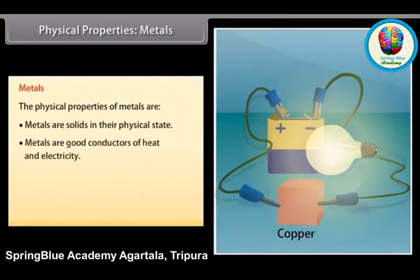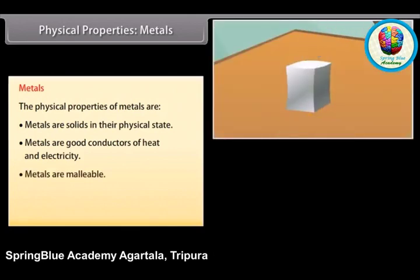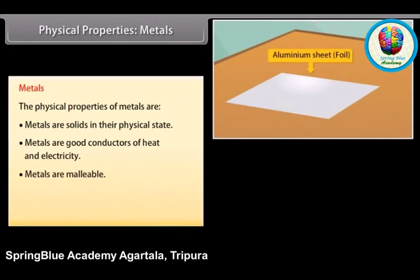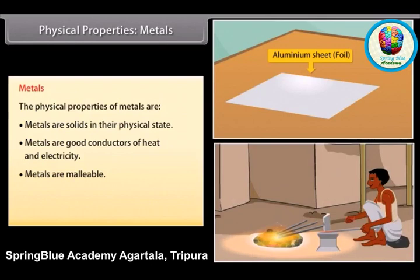Metals are good conductors of heat and electricity as they have free electrons. Silver and copper are the best conductors of heat and electricity, whereas lead is the poorest conductor of heat. Metals are also malleable — they can withstand hammering and be made into thin sheets known as foils. For example, iron is heated and then hammered into different forms, foils, shapes, etc.